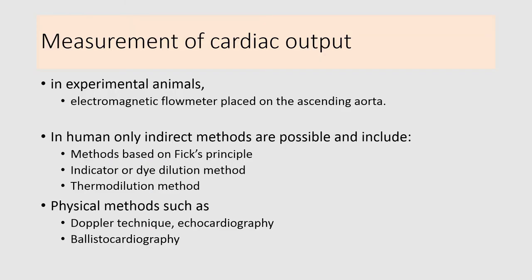Now let's understand how cardiac output can be measured in experimental animals as well as in clinics. In experimental animals, cardiac output is usually measured by an electromagnetic flow meter. In humans, only indirect methods are possible, including the Fick principle method, indicator or dye dilution method, and thermodilution method, as well as physical methods such as Doppler technique, echocardiography, and ballistocardiography.